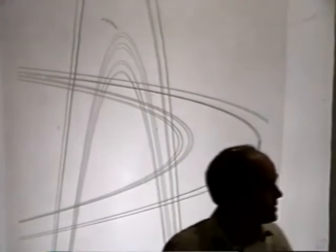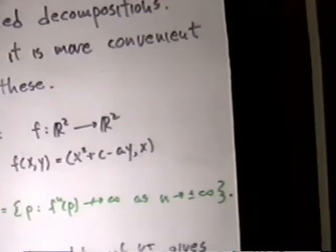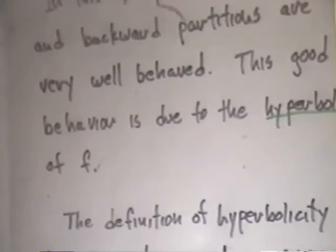This is a nice example because it can be worked out pretty easily, corresponding to certain values of the constants A and C. But in a sense it's a special example — it's special because this map has certain special dynamical features. This is an example of a hyperbolic dynamical system, and it's the hyperbolicity that gives us this laminar structure for these sets.